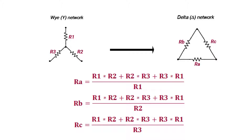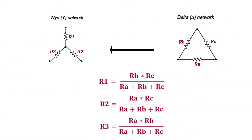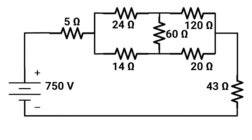To convert delta to star configuration, follow this formula. R1 will equal Rb times Rc, which are the near resistors, over Ra plus Rb plus Rc. R2 will equal Ra times Rc, which are the near resistors, over Ra plus Rb plus Rc. R3 will equal Ra times Rb over Ra plus Rb plus Rc.